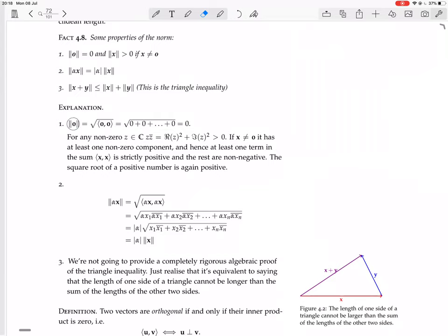So, the norm of the zero vector is, of course, the square root of the inner product of zero with itself. Each component of zero is zero, so it's just zero times zero, zero times zero, and so on. So it's square root of zero, which is zero.